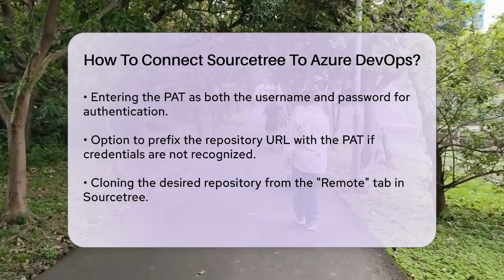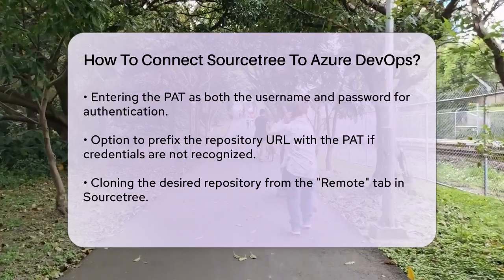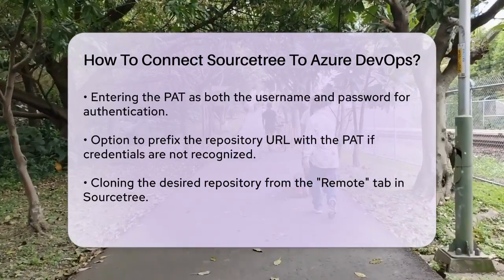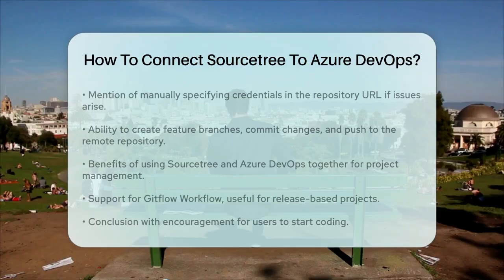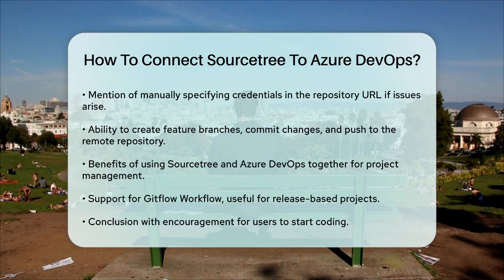Once you've connected SourceTree to your Azure DevOps repository, you can start working on your project seamlessly. You can create feature branches, commit changes, and push them to the remote repository using SourceTree's intuitive interface. By following these steps, you'll be able to leverage the best of both worlds: the ease of use of SourceTree and the robust features of Azure DevOps.